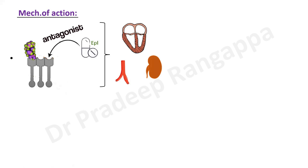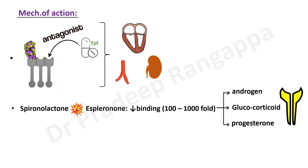So why do we need eplerenone when we have spironolactone? Eplerenone is more specific with regards to receptor action. Spironolactone can cause gynecomastia because it can bind to other receptors like androgen receptors, progesterone receptors, and glucocorticoid receptors. Eplerenone is more specific to aldosterone receptors only and showed decreased binding by up to 100 to 1000-fold to these other receptors.